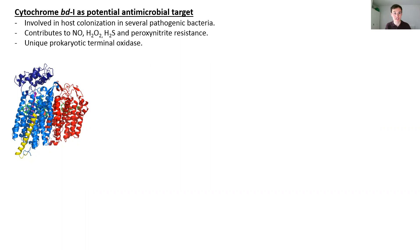Cytochrome BDs are terminal oxidases that are found in several pathogenic bacteria such as Mycobacterium tuberculosis and E. coli, for which the structure is shown here. They have been shown to be important in host colonisation as they provide increased resistance to reactive oxygen and reactive nitrogen species such as nitric oxide, peroxynitrite and hydrogen peroxide.